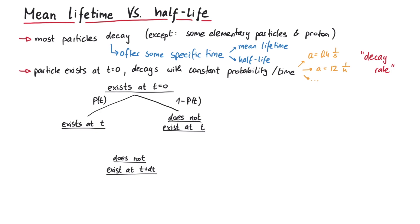so it does not exist anymore at time t plus dt, or it survives and does exist at t plus dt. The probability that it decays is given by the decay rate multiplied by the corresponding time interval, and the probability that it survives is given by one minus that probability.